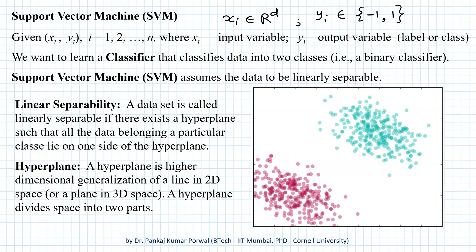In this session we are going to learn about the classification technique called support vector machine or SVM. We are given n data pairs of the form (xi, yi), where xi is the input variable and yi is the output variable, label, or class of xi. Here xi belongs to a d-dimensional space. For SVM, the class yi is denoted by -1 and 1, which is different from other classification techniques where we normally use 0 and 1. This -1 and 1 have a special use that will be described later.